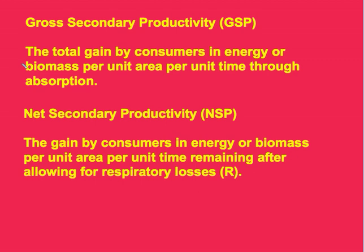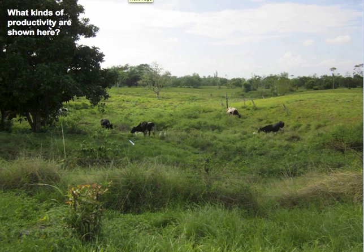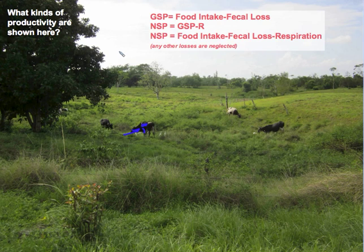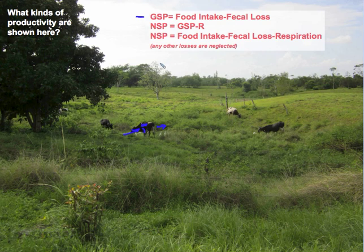Now let's consider the gross secondary productivity: the total gain by consumers in energy or biomass per unit area per unit time through absorption. This definition focuses on the total uptake of food. Because it only considers what's taken up through absorption and not what's used in respiration, the gross secondary productivity constitutes the food assimilated or absorbed by the organism, minus what comes out unused in feces. The gross secondary productivity does not include the loss from respiration.